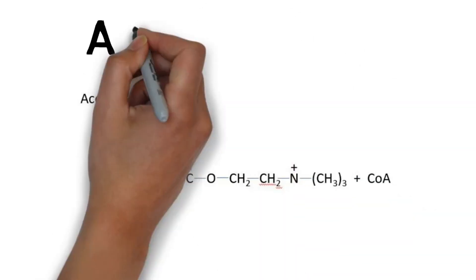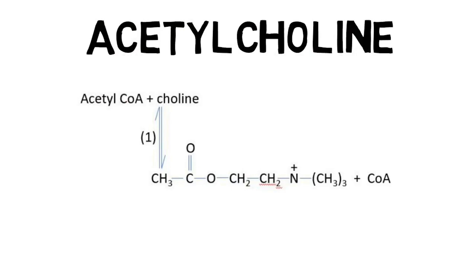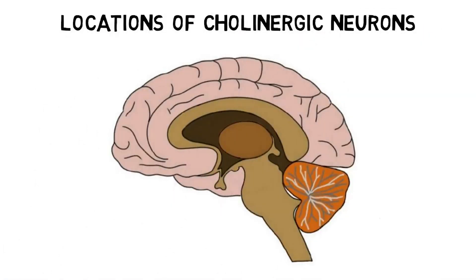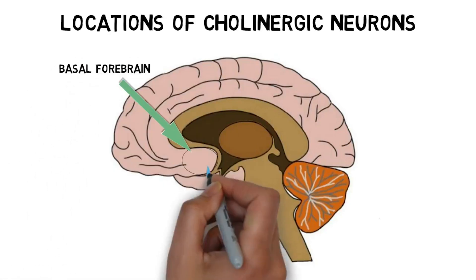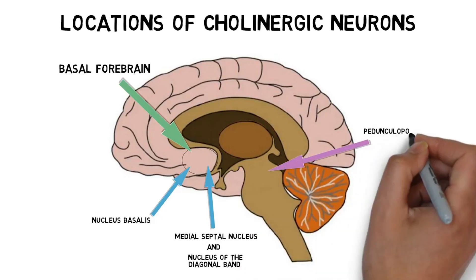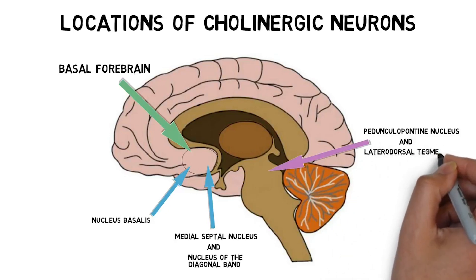Acetylcholine was the first neurotransmitter discovered, and is named for the two substances used to synthesize it: the nutrient choline and the enzyme acetylcoenzyme A. Neurons that contain acetylcholine are called cholinergic. There are several clusters of cholinergic neurons throughout the brain. Some are found in the basal forebrain, including the medial septal nucleus, the nucleus of the diagonal band, and the nucleus basalis. Others are found in the brain stem, including the pedunculopontine nucleus and lateral dorsal tegmental nucleus.